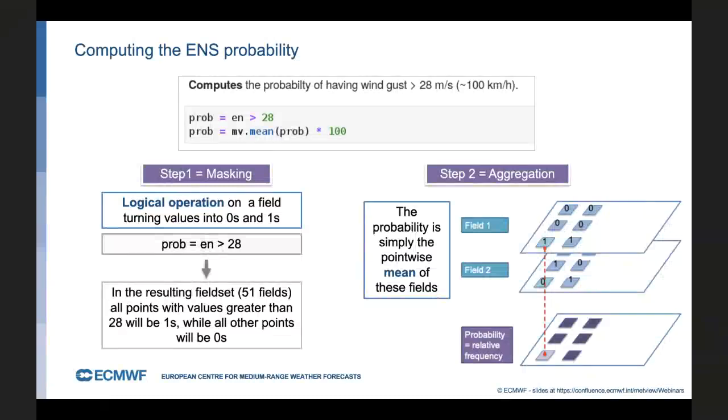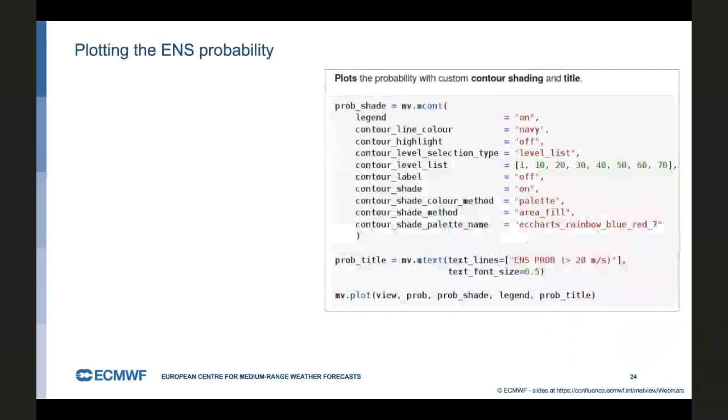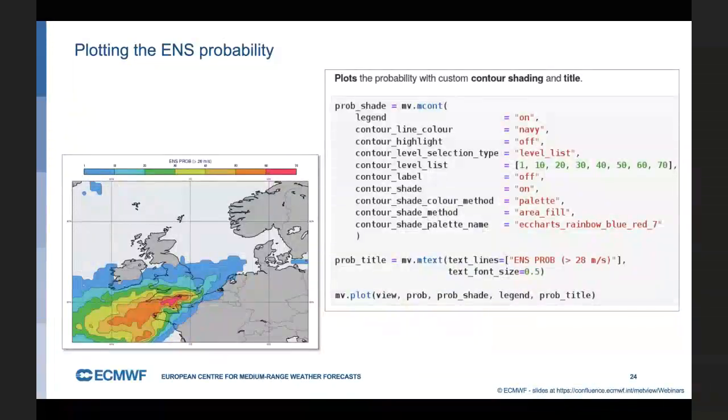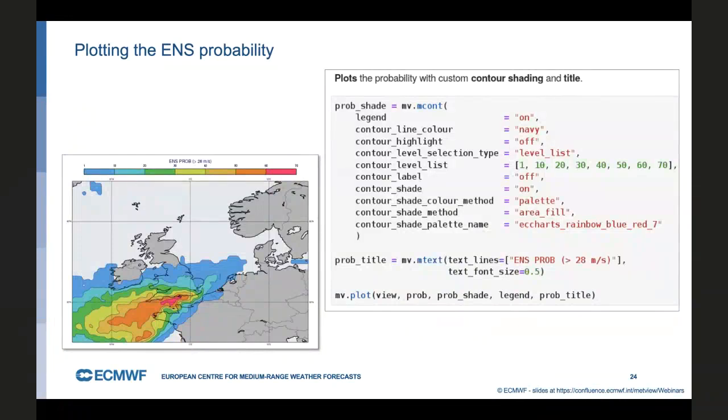So having computed this probability field, plotting is very simple. We first create a new contour definition for it to adjust for the current range, define a custom title and use the plot command as before. And we get the probability map which shows that there was indeed a very high probability of this high wind gust value in the given area.